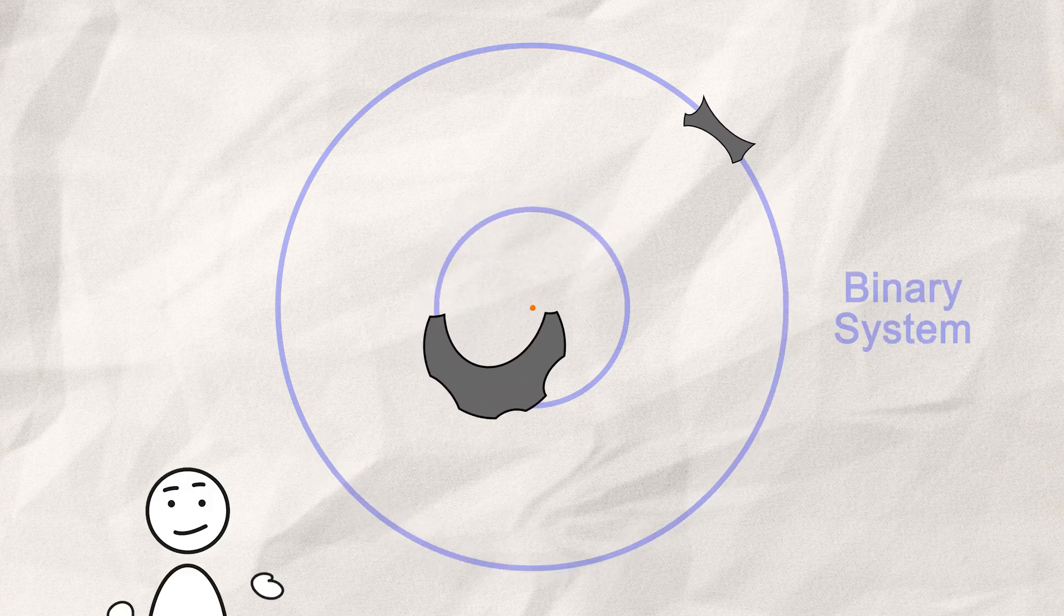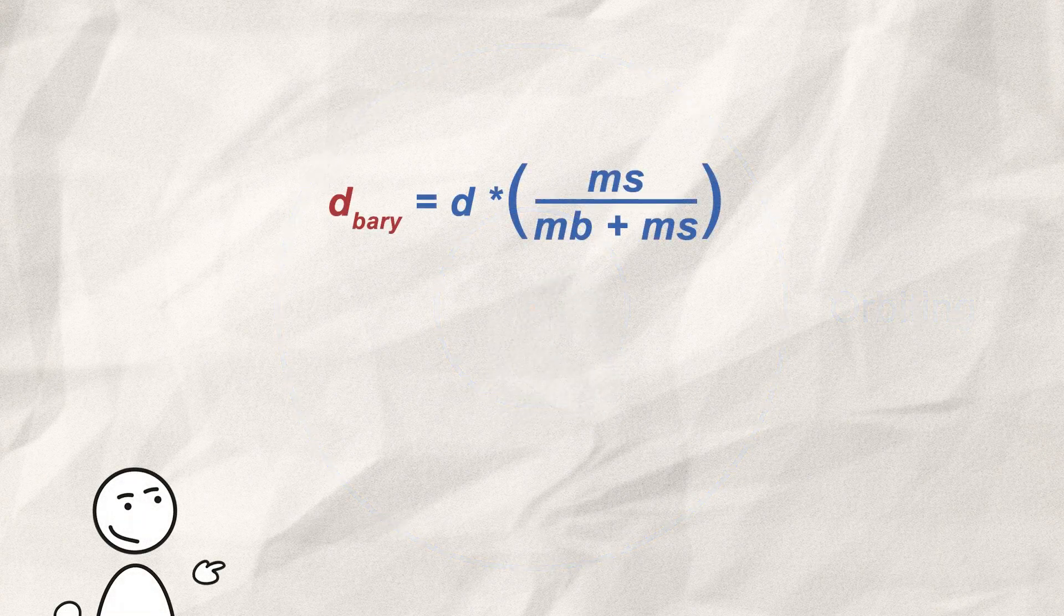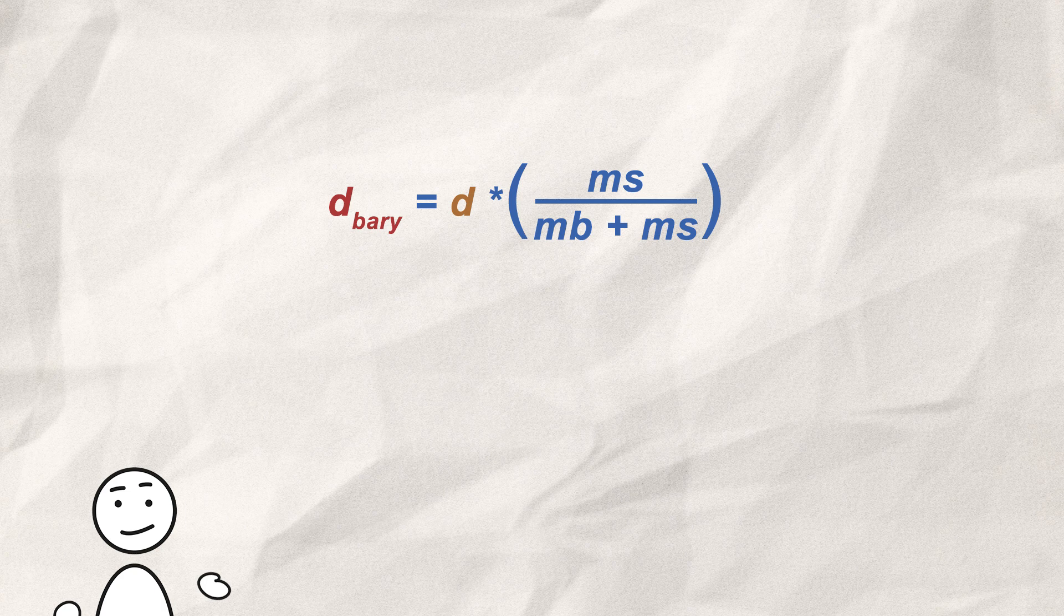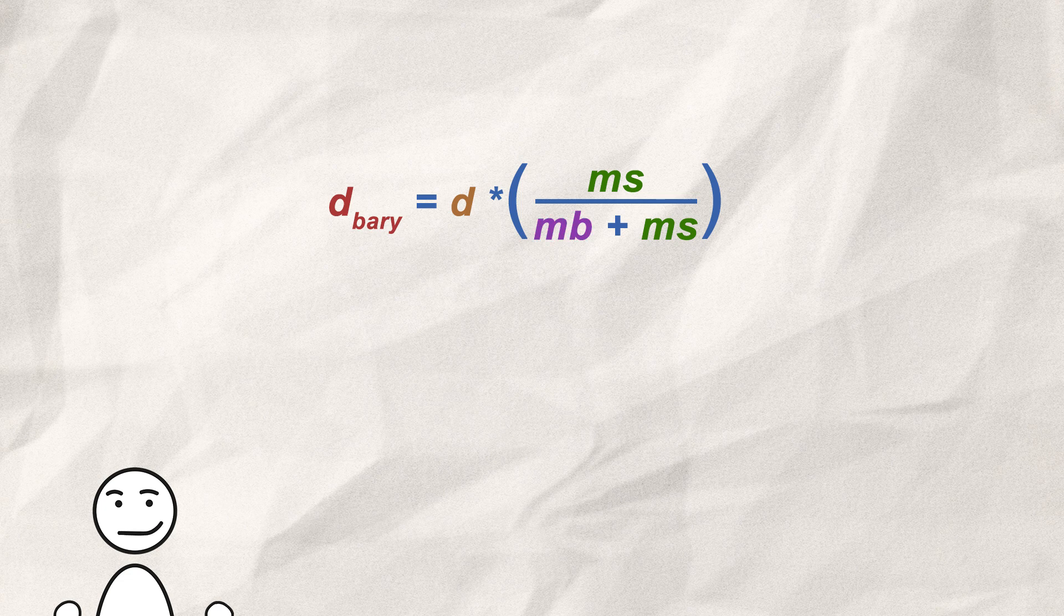With this, we can now have a little bit of fun. Using this formula, we can calculate the barycenter of two celestial bodies. While d is the distance between the object's centers, ms is the mass of the smaller body, while mb is the mass of the bigger one.